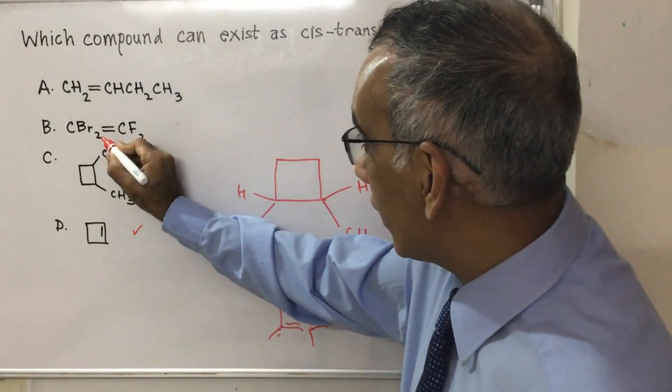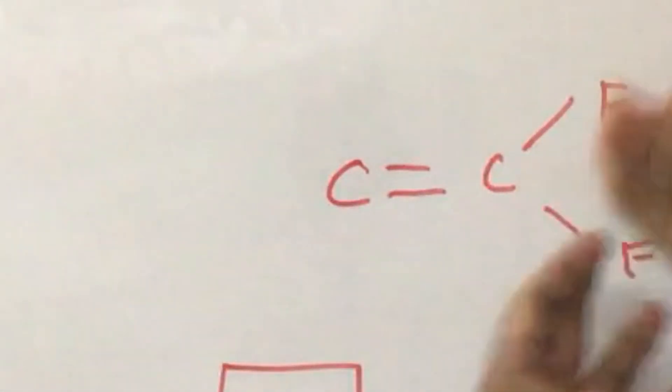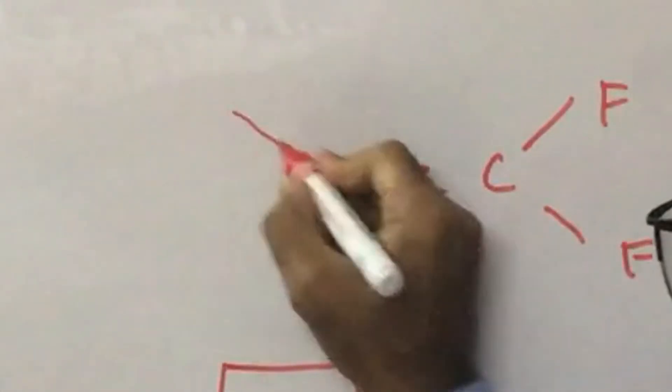And then you have this structure here, where you have two fluorines on the same side. So the fact that they can't rotate doesn't make any difference.